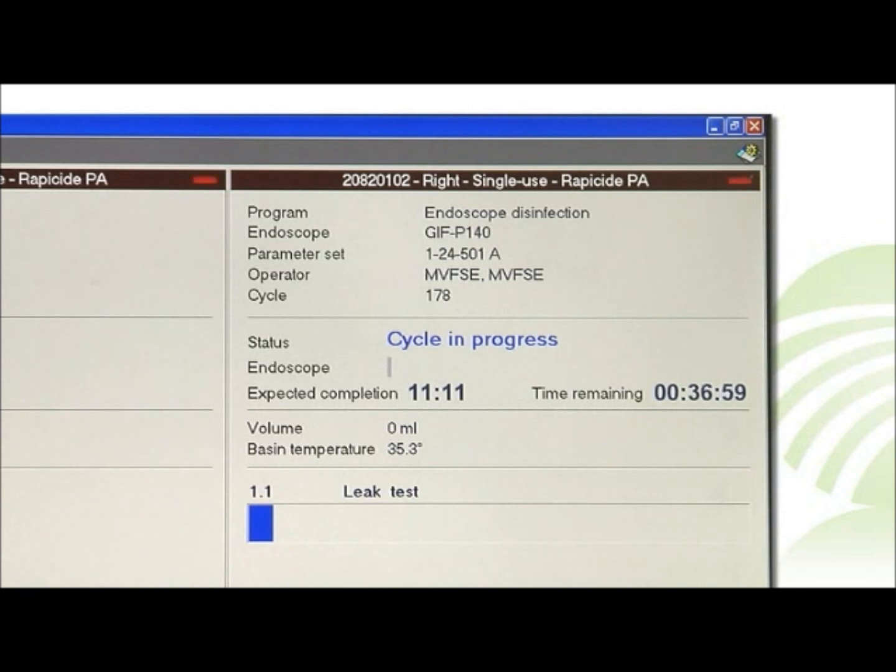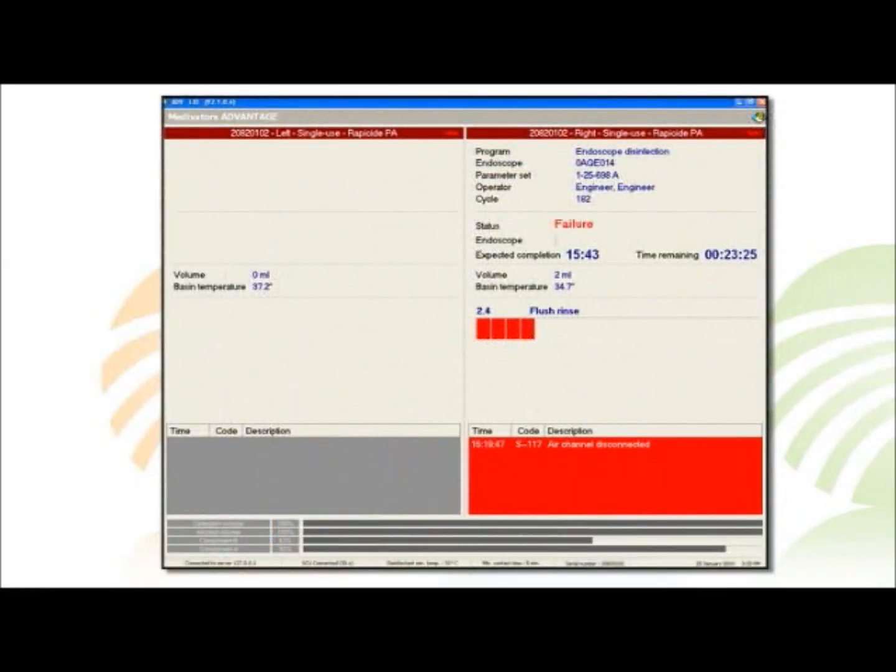The phase following the leak test monitors channel connectivity and blockages. If the system detects a channel disconnection or blockage, an error message will display on the program screen and the cycle is halted.